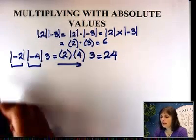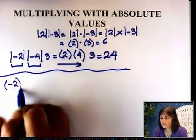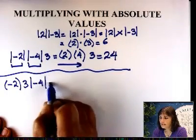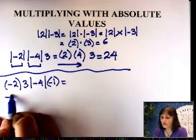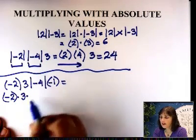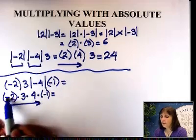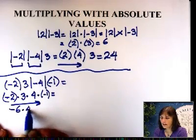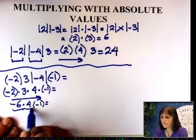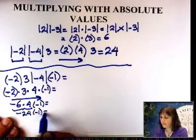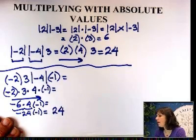Let's mix-match absolute values and signed numbers. Negative 2 times 3 times the absolute value of negative 4 times negative 1. First, get rid of the absolute values: negative 2 times 3 times 4 times negative 1. Left to right: negative 2 times 3 is negative 6, times 4 is negative 24, times negative 1 is positive 24. When you do them one step at a time, you'll be okay.